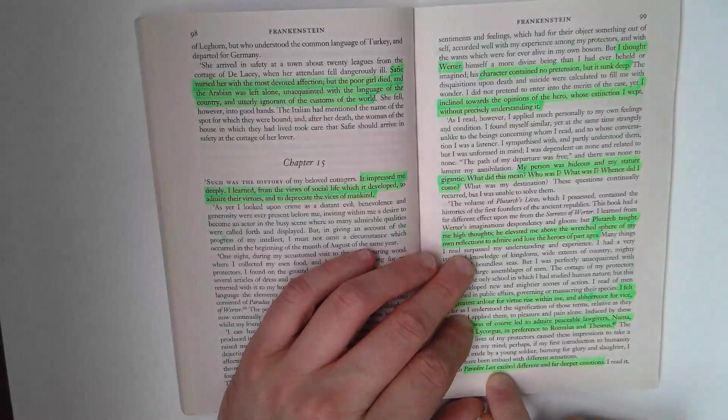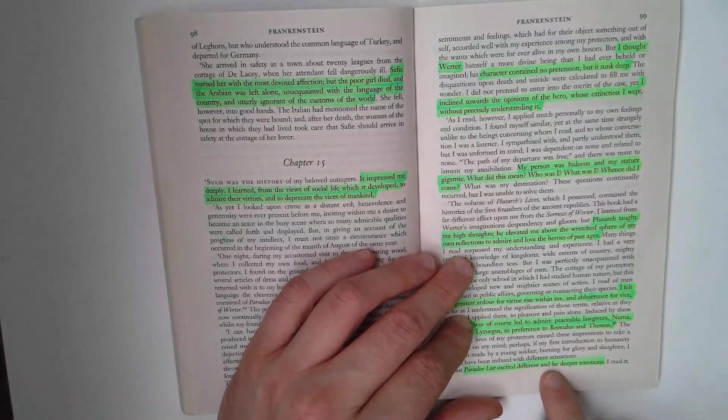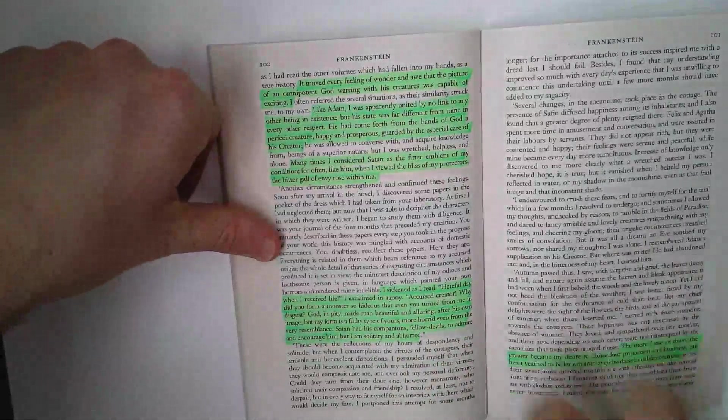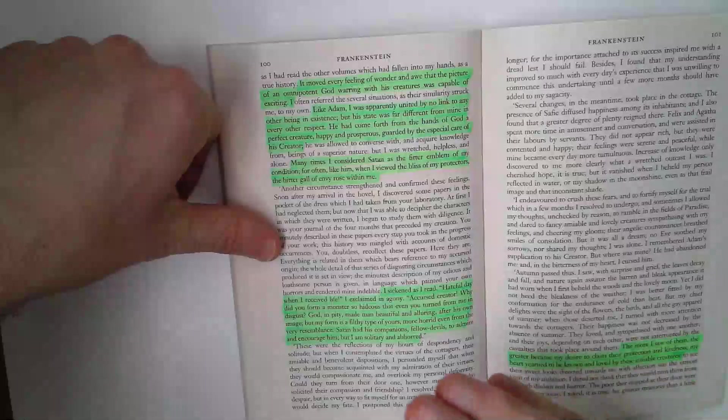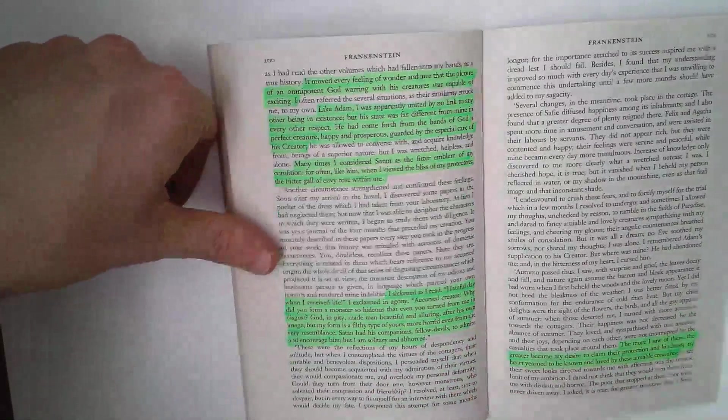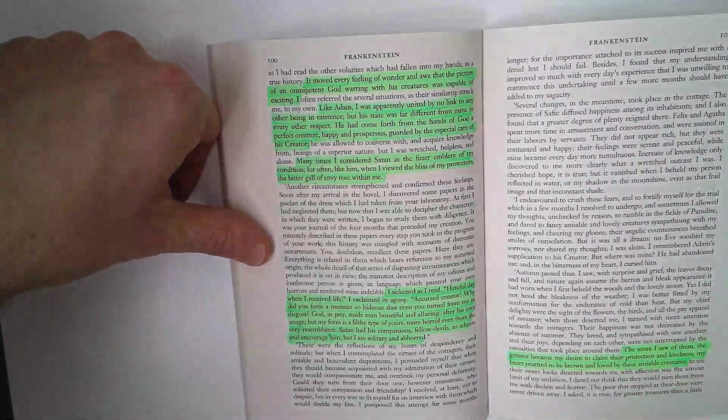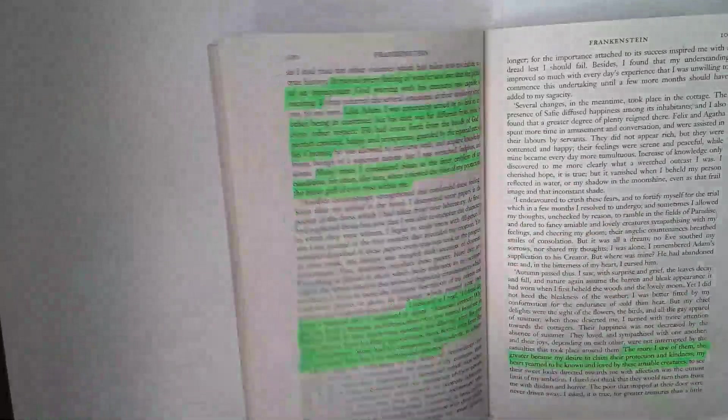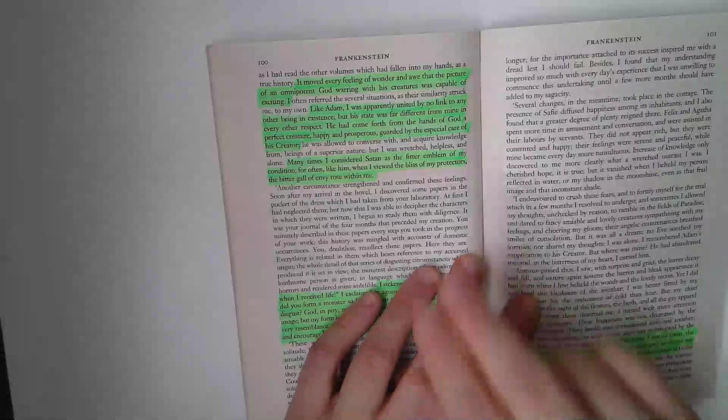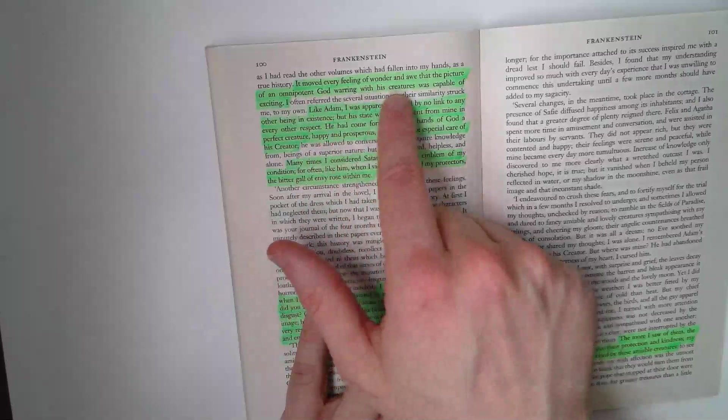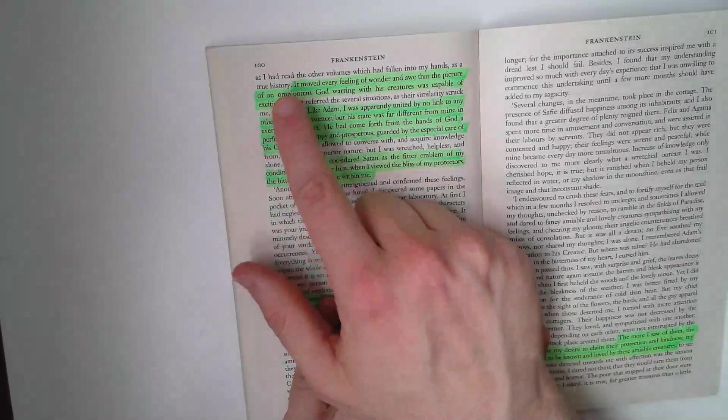Paradise Lost is perhaps the most important text really. It's like different and far deeper emotions. Paradise Lost is the telling of the story of Lucifer falling from God's right hand to become Satan. And it tells the story of the creation as well. It's interesting because the creature refers to characters from Paradise Lost frequently. Shelley makes that link between the creature as either Adam or Satan. It moved every feeling of wonder and awe that the picture of an omnipotent God warring with his creatures was capable of exciting.